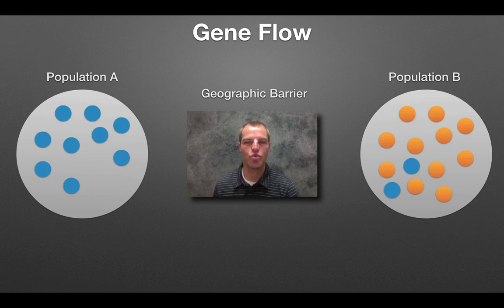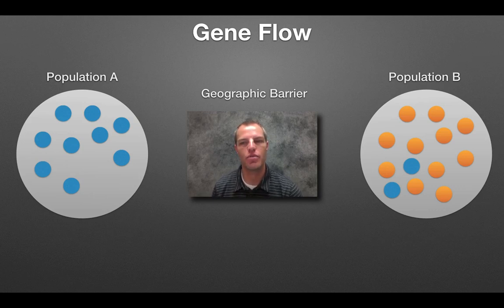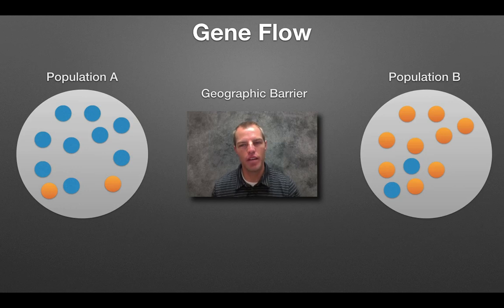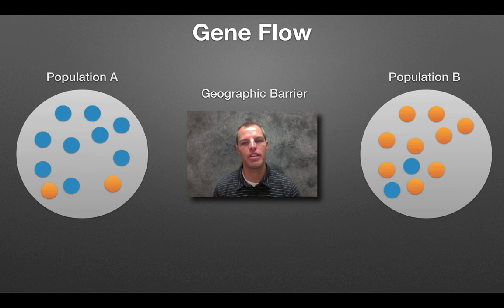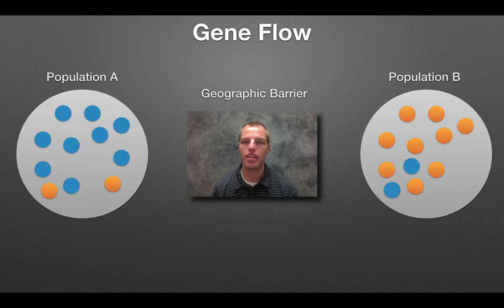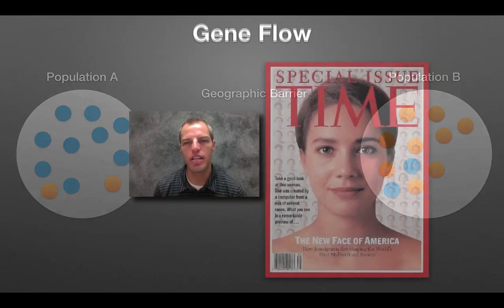If that new gene is well selected for that area, we're going to start to see evolution or change within that population. The same thing could happen in reverse — population B could gene flow over into population A. Obviously they would have to cross that barrier, find a way across the Grand Canyon or body of water. But genes can flow in and out of populations, and if that's happening it's going to affect the allele frequencies within those populations, and evolution could take place through natural selection.